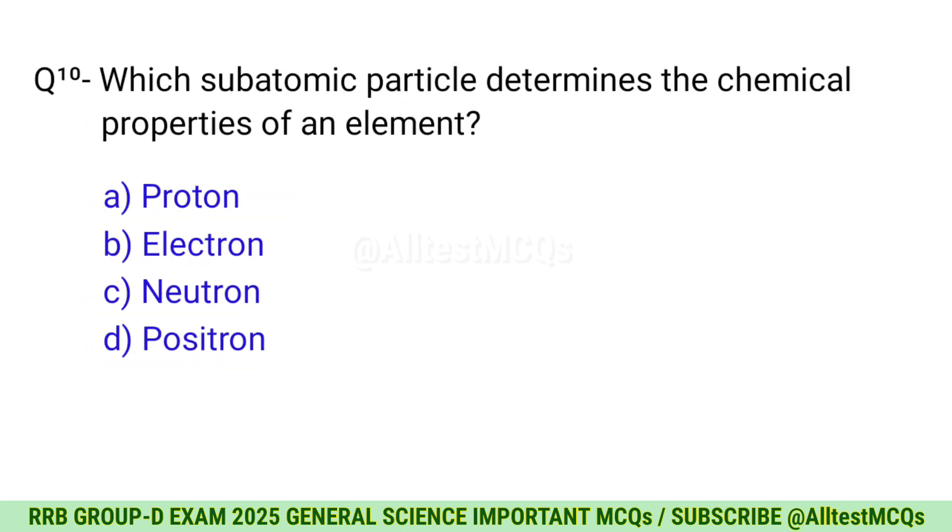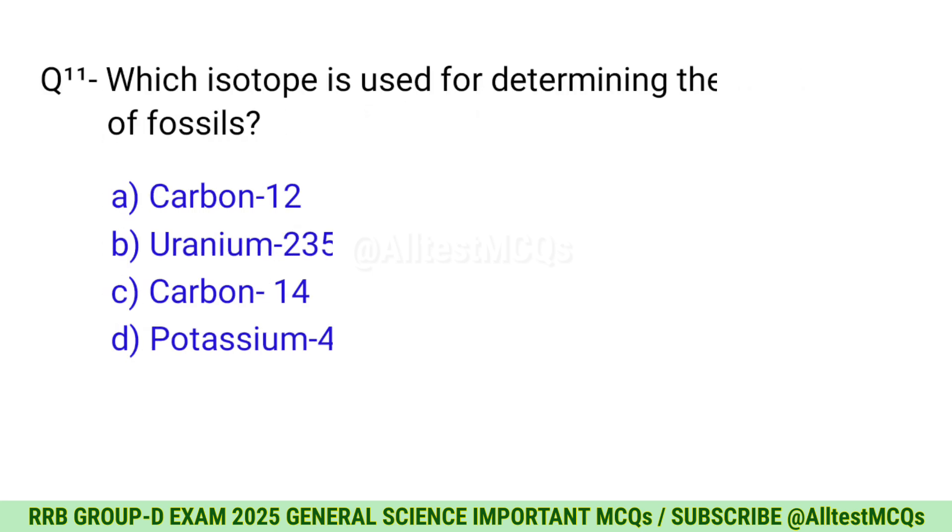Question 10: Which subatomic particle determines the chemical properties of an element? B, Electron. Question 11: Which isotope is used for determining the age of fossils? C, Carbon 14.